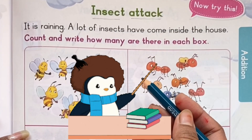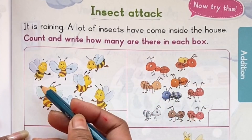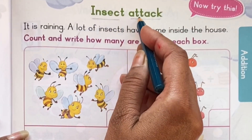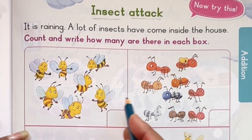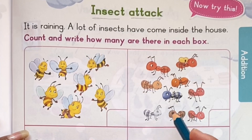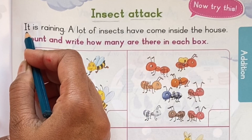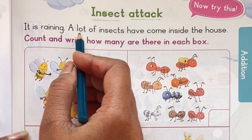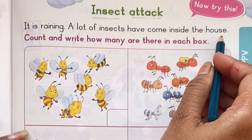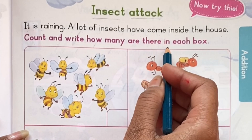Hello students, let's learn addition with the help of a new worksheet. The title of the worksheet is Insect Attack. Can you see the insects? Yes, these are insects. So students, let's begin our worksheet. It is raining, and a lot of insects have come inside the house. Count and write how many are there in each box.